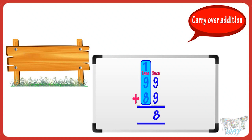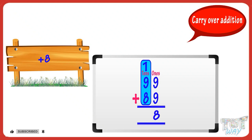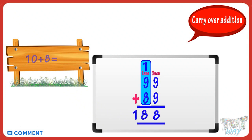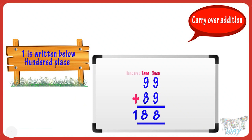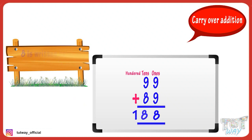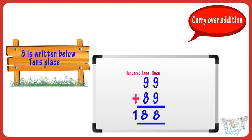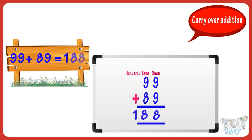Now add the three digits in the tens place: one plus nine plus eight. One plus nine equals ten, and ten plus eight equals eighteen. Now write the two-digit sum — one is written below the hundreds place, and eight is written below the tens place. We got it! Ninety-nine plus eighty-nine equals one hundred and eighty-eight.